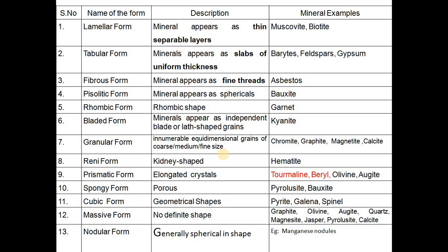Similarly, tabular form is exhibited by the minerals vermiculite, feldspars, and gypsum, where the minerals appear as slabs of uniform thickness — the thickness is a bit more when compared to lamellar form. Another form is fibrous, best example being the mineral asbestos, where one can find very fine threads.